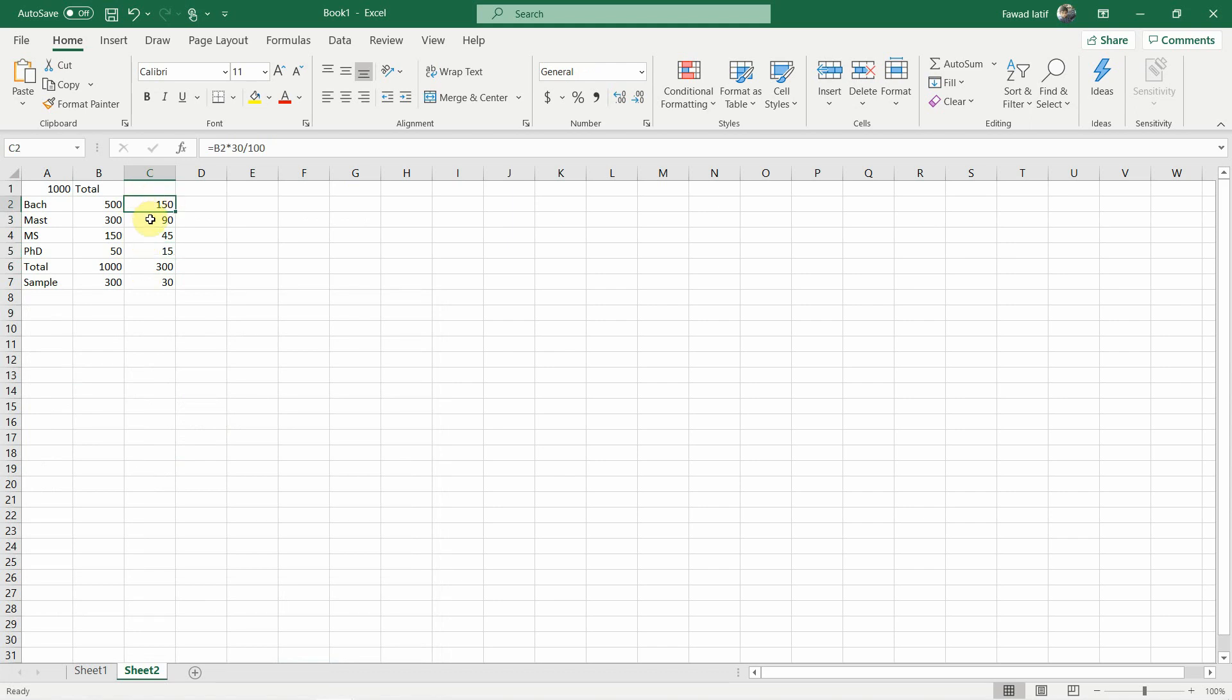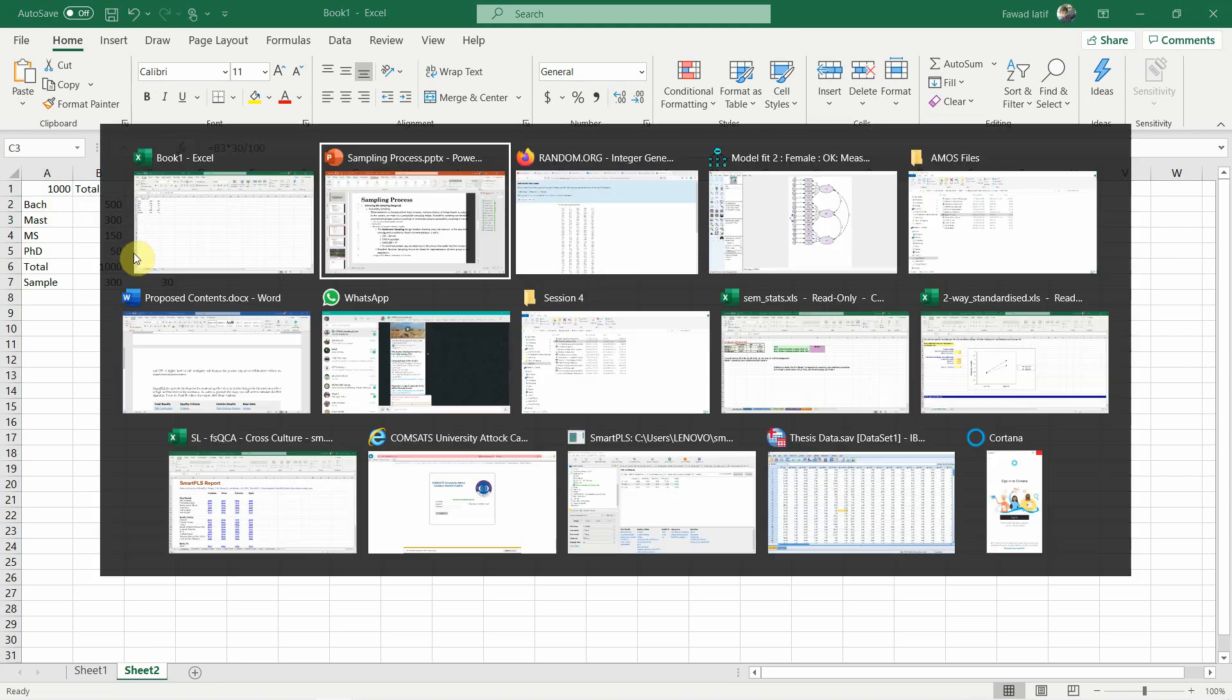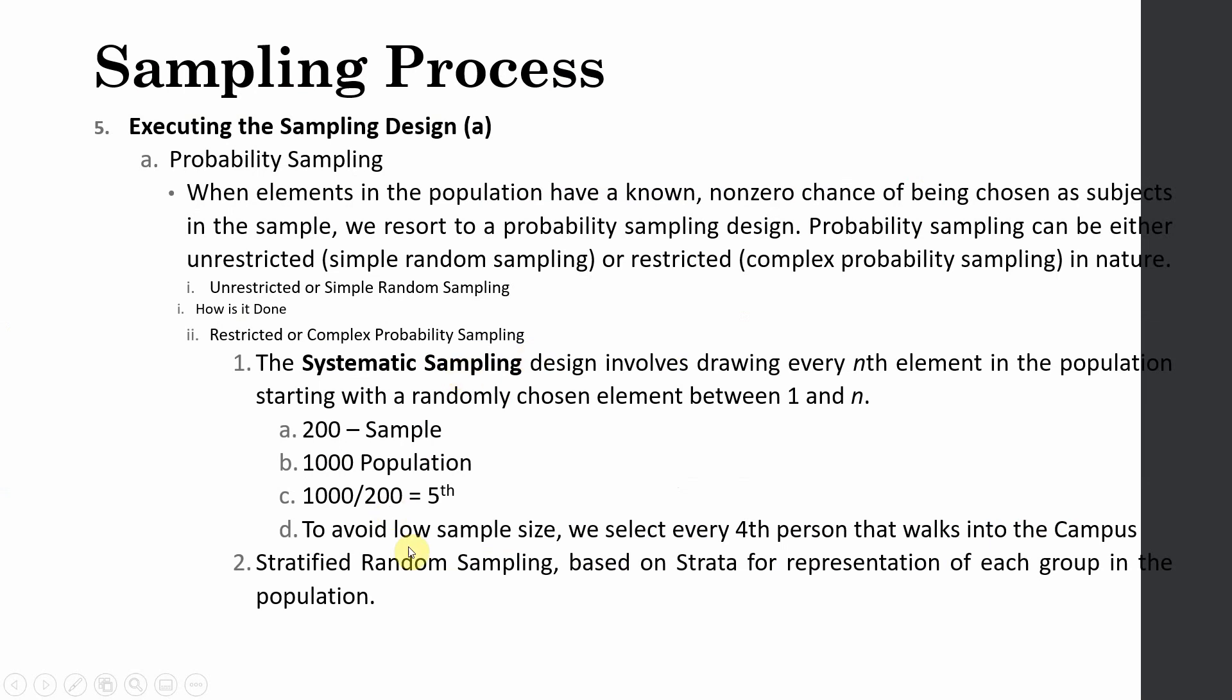Now this is how you can sample from each group to avoid under-representation. Now how will I select this 150 or 90 or 45 or 50? If you're doing stratified random sampling, obviously you will have the sample frame. You will have the list of these students. And then you will follow the similar procedure as we did earlier. Generate random numbers and select 150 from this list, 90 from this, and so on. Moving on. Now we know how to do stratified random sampling based on strata for representation of each group in the population.